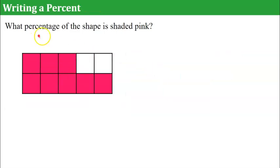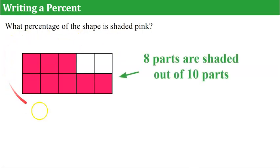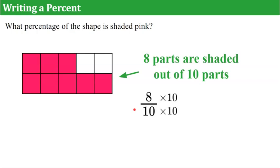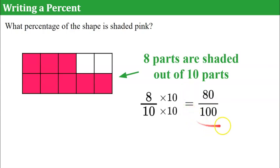Try this one. Write the percentage of the shape that is shaded pink. Go ahead and pause and come back when you're done. Welcome back. This one was a little trickier. We only have 10 squares in our illustration and 8 of the parts out of the 10 parts are shaded, but a percent is out of 100. So when we write our ratio, we get 8 out of 10. To write it as a percent, we're going to change this to a number out of 100. If I multiply both the numerator and denominator by 10, then I have 80 out of 100. Now I know how many parts out of 100, and I can write my percent.